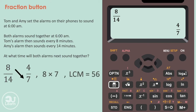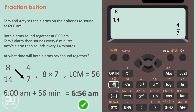Both alarms will land on the same time at 56 minutes. So we add 56 minutes to 6am, giving us the time of 6:56. Both alarms will ring again at 6:56am.